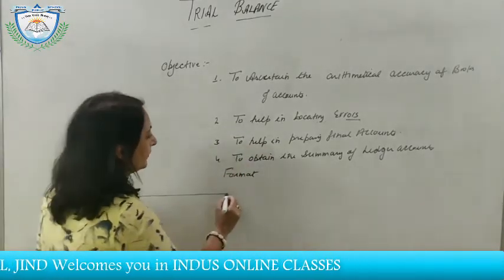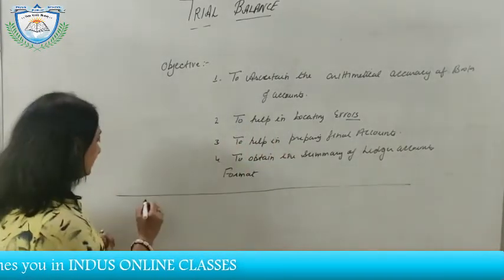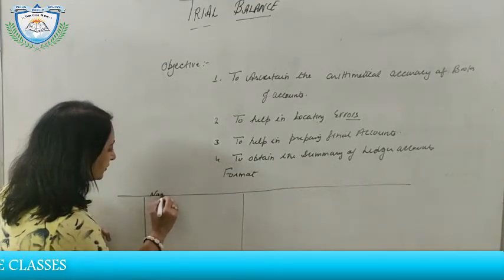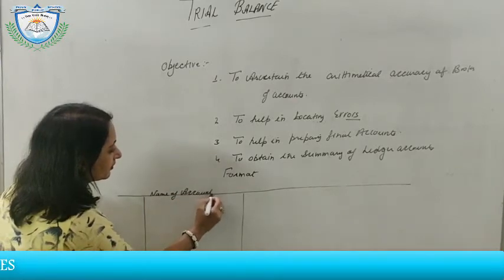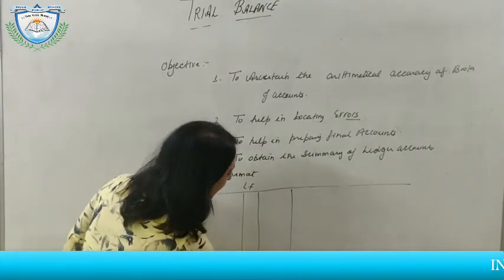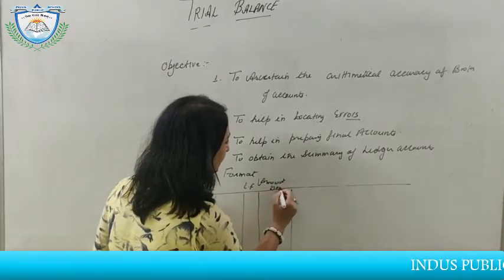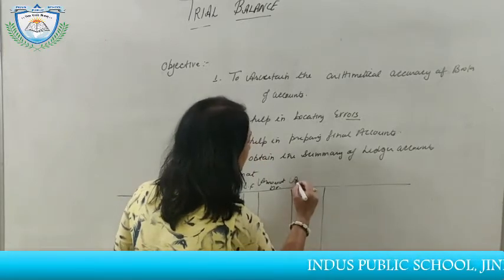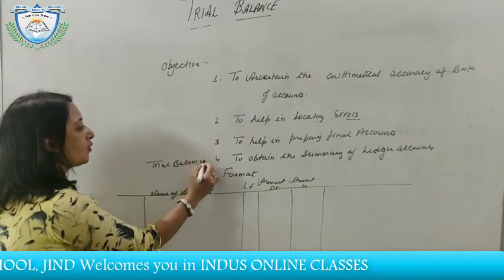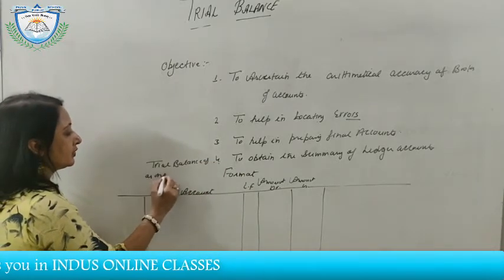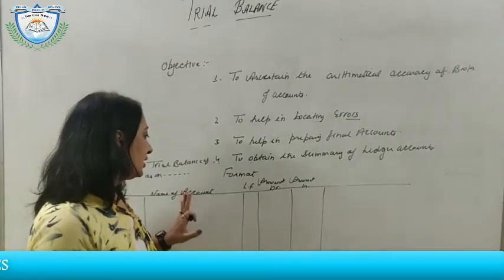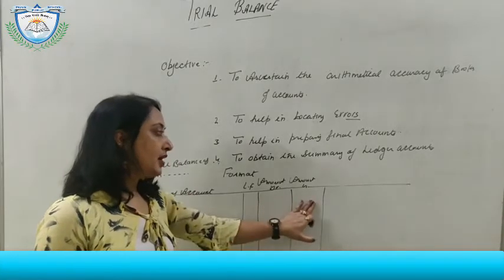Now, what is the format of trial balance? The format includes: name of account, ledger folio, amount debit, and amount credit. The heading is: Trial Balance of [business name], as on 31st March 2018-19. This is the format of trial balance — it's very easy.